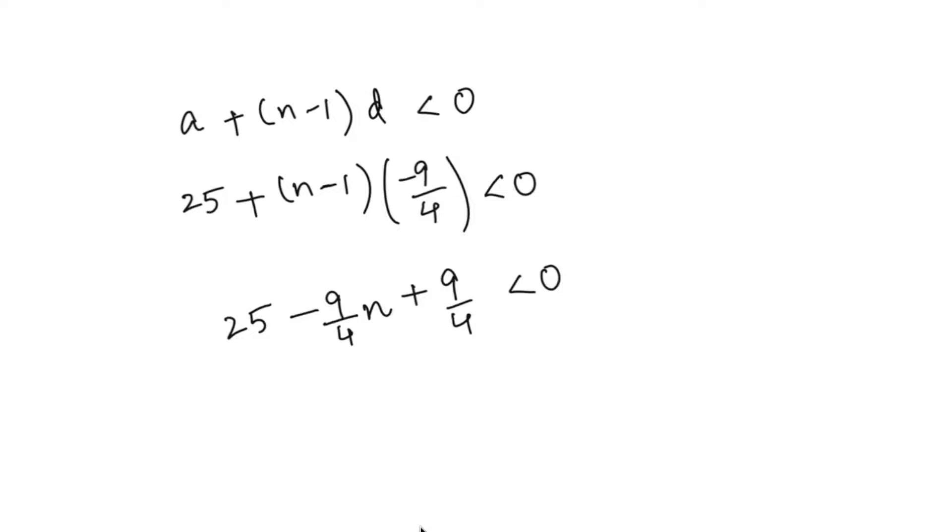Multiplying throughout by 4, we get 100 minus 9n plus 9 less than 0, which simplifies to 109 minus 9n less than 0, or 109 less than 9n.